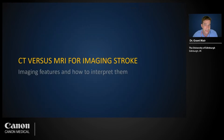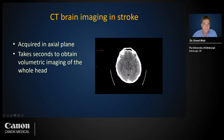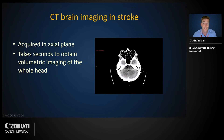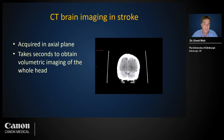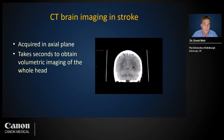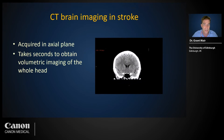Now we will consider the CT and MRI features of stroke and how to interpret them. Whole brain volumetric CT imaging takes only seconds to acquire — about the same length of time it takes to scroll through the image stack — and can be viewed in any plane.